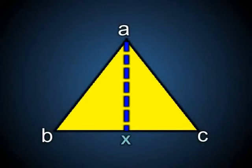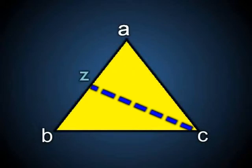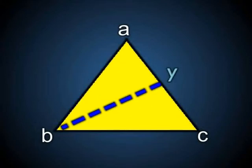We will begin our discussion by looking at the median of a triangle. The median of a triangle is a line drawn from any angle of a triangle to the midpoint of the opposite side. For example, in triangle ABC, a median would be a line drawn from A to X, where X is the midpoint of BC, or from C to Z, where Z is the midpoint of AB, or from B to Y, where Y is the midpoint of AC.